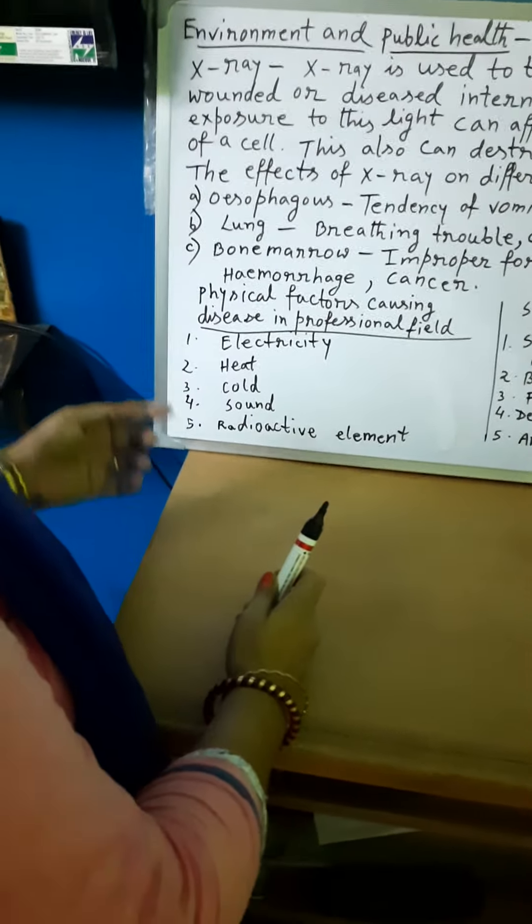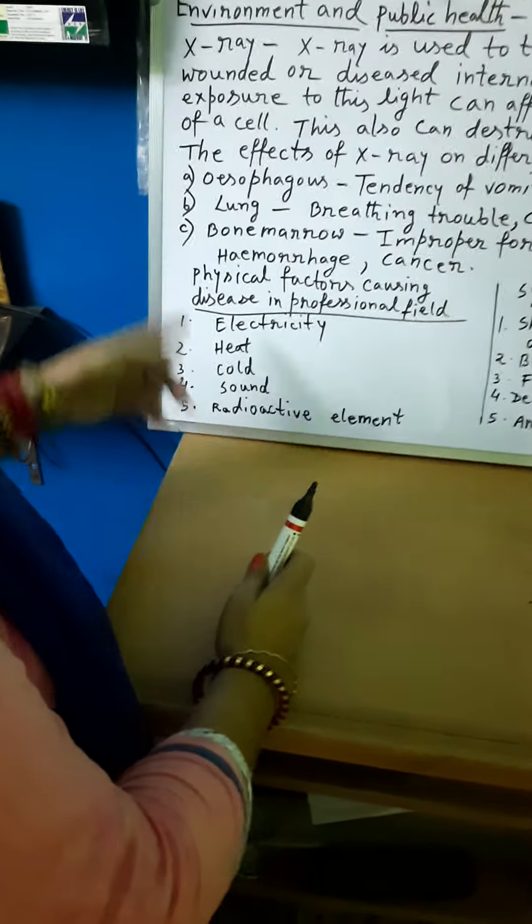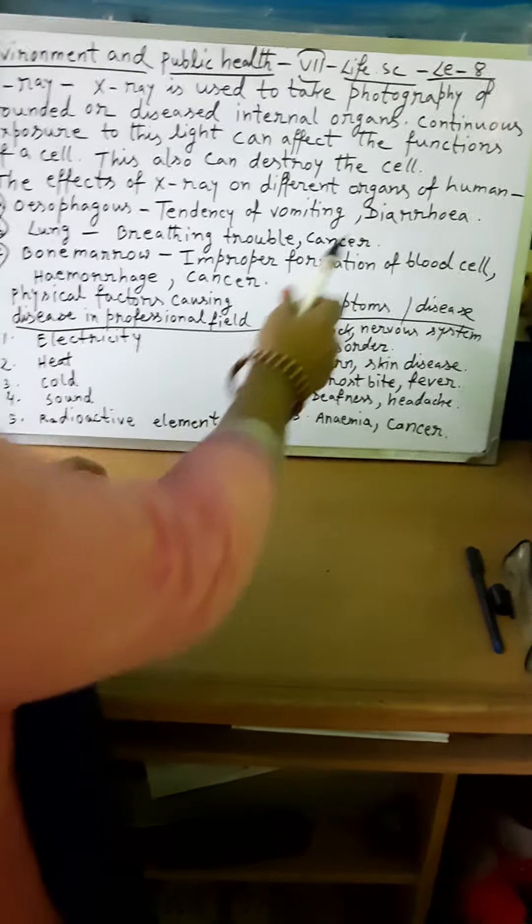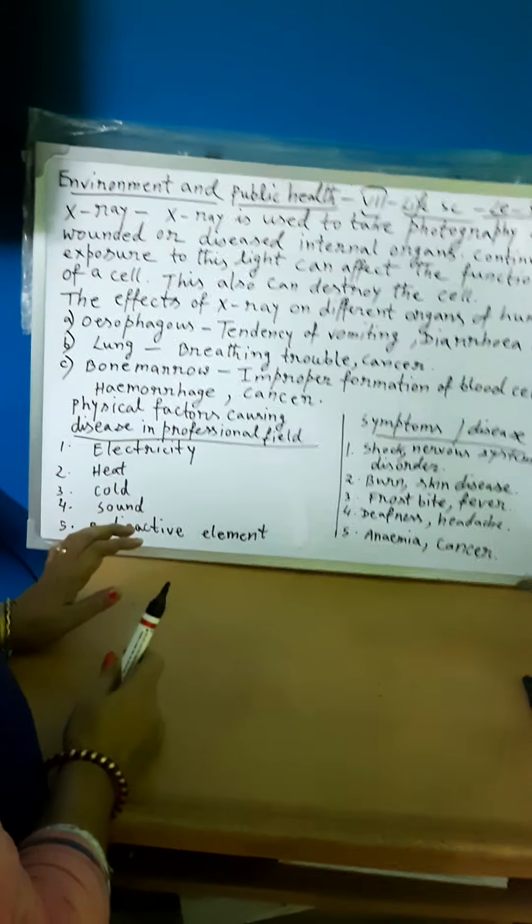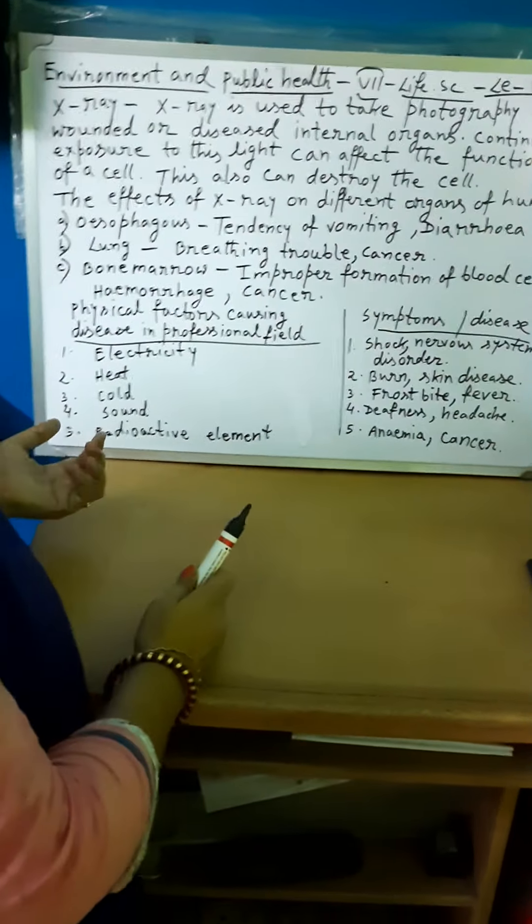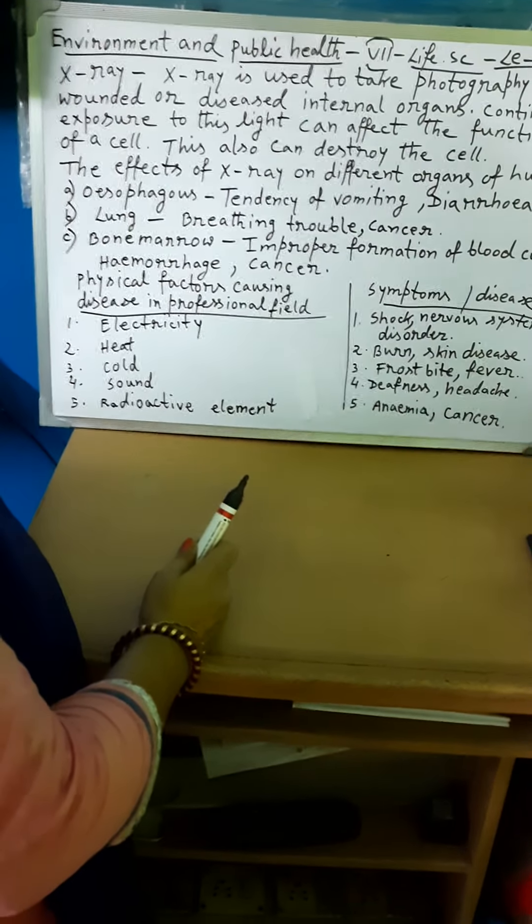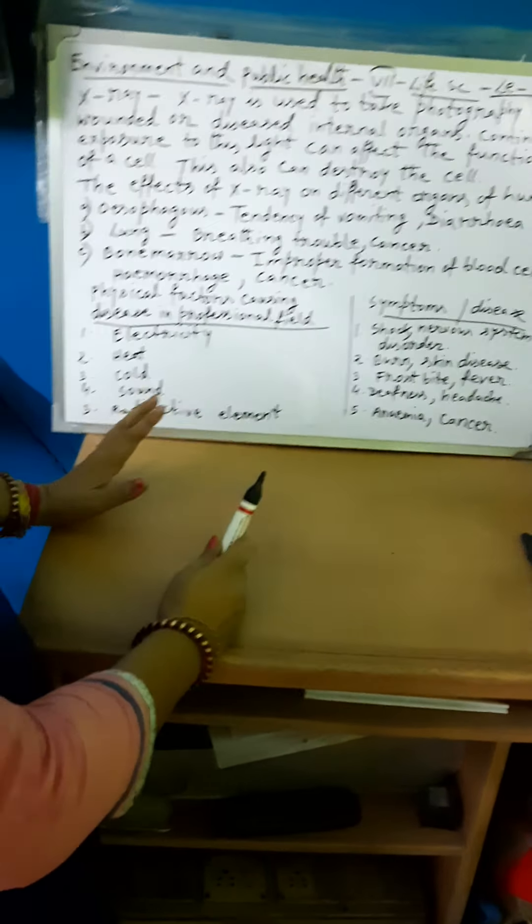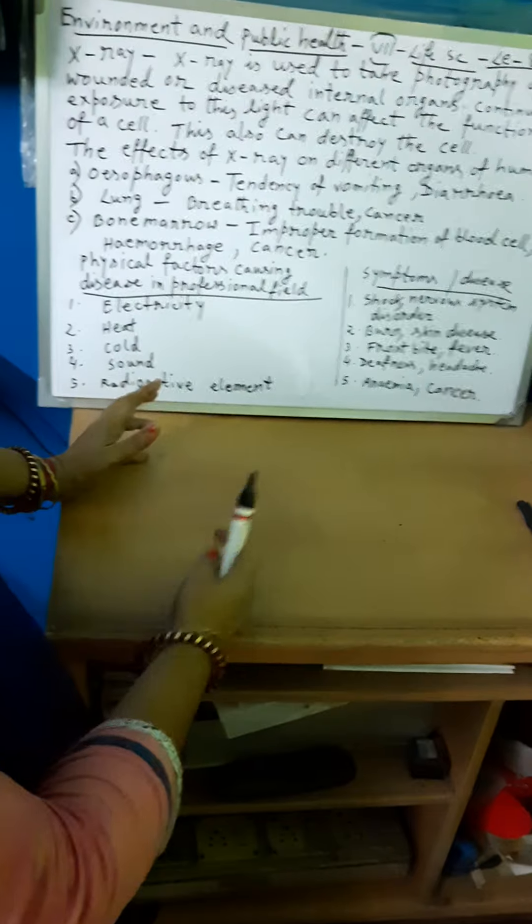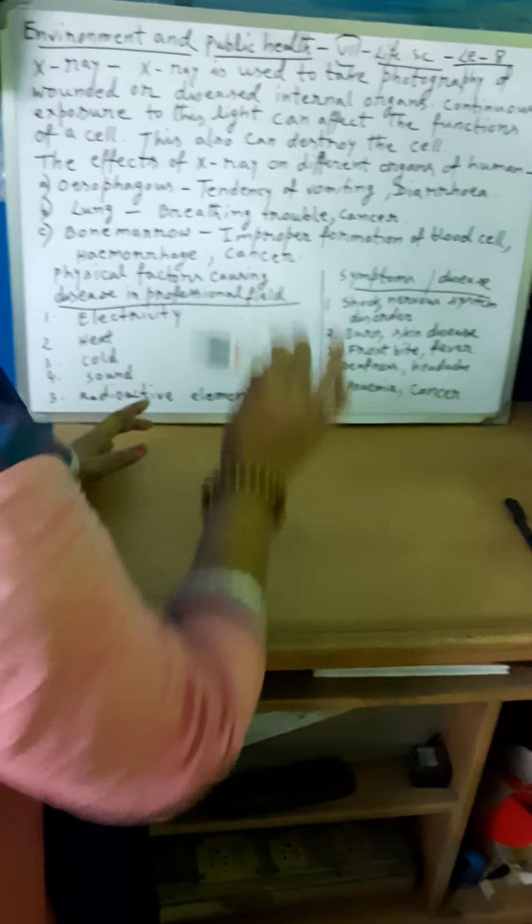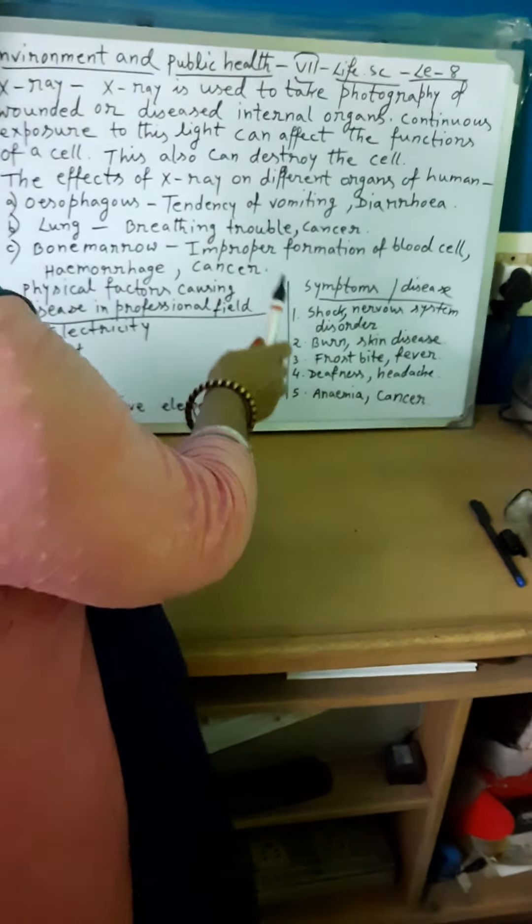The effect of X-ray on different organs of humans. Lung - breathing trouble. Through lungs we take oxygen and release carbon dioxide. When there's a problem in lungs, the breathing system has trouble. There's difficulty in breathing and cancer can also occur.